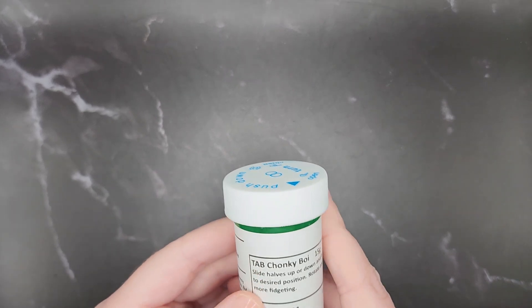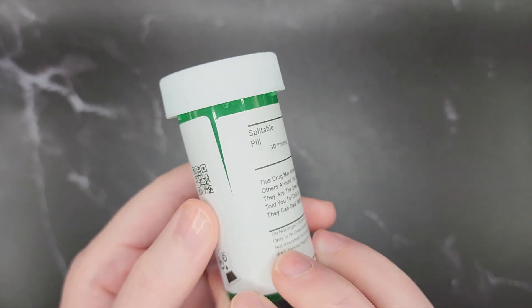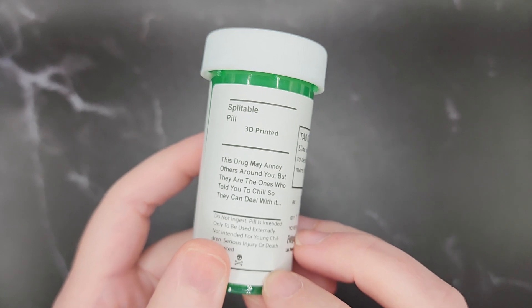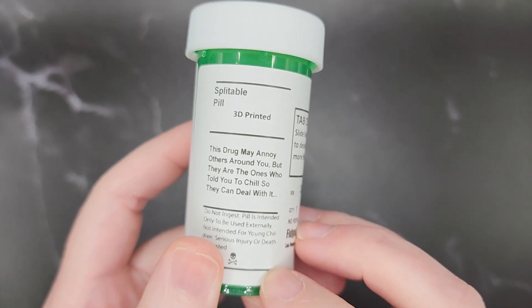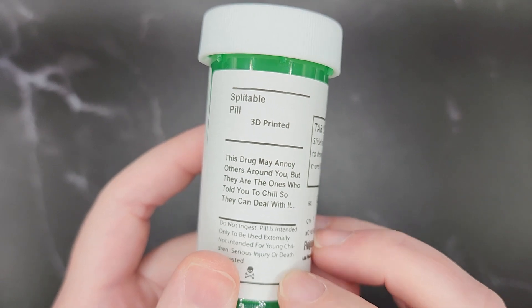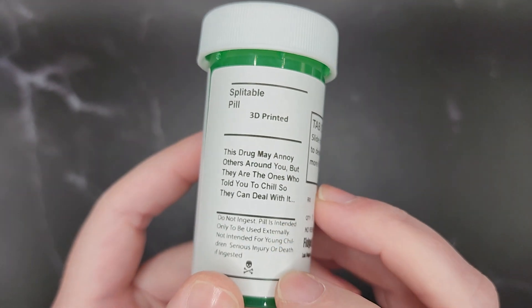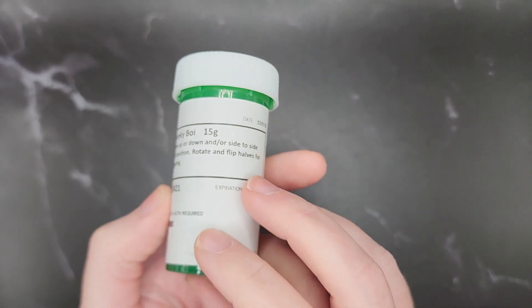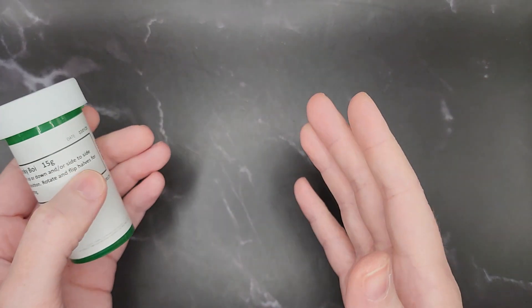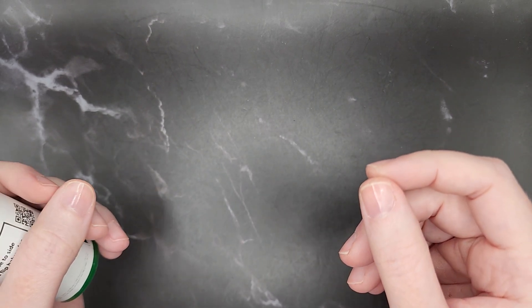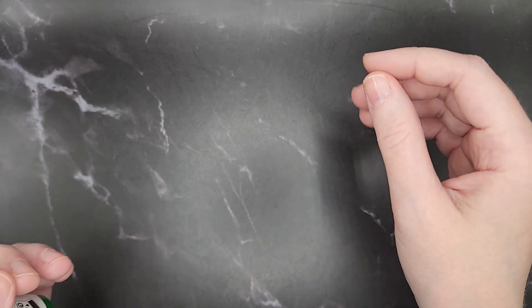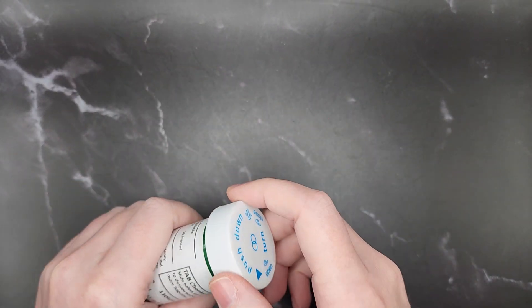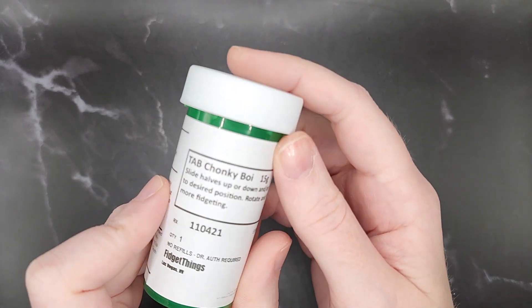Alright so this is the container that you get with it. It is cute. I like it. 3d printed a splittable pill. This drug may annoy others around you but they're the ones who told you to chill so they can deal with it. That's pretty great. Do not ingest. Yeah if you have magnets that you ingest it can definitely kill you in a really terrible way because in your intestines if they are separated and then they reconnect they can pull your intestines. Yeah it's not fun.